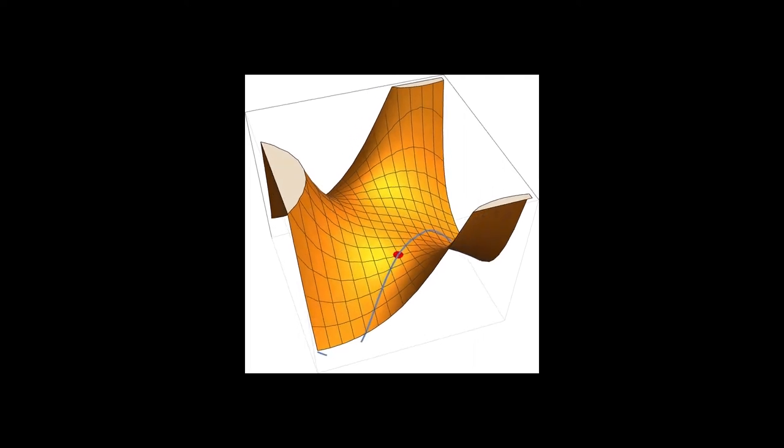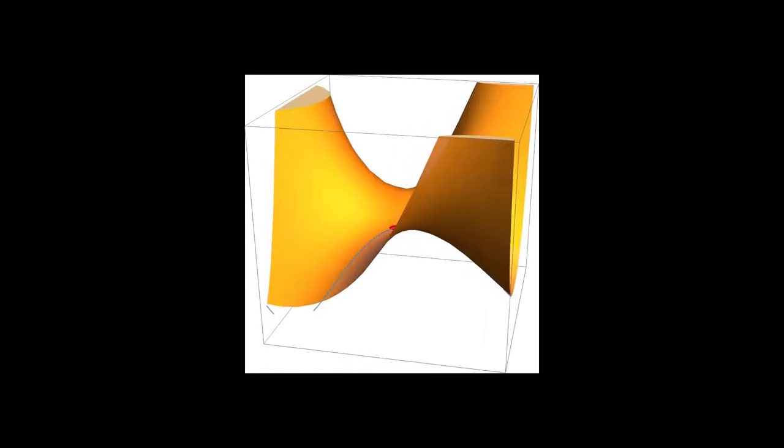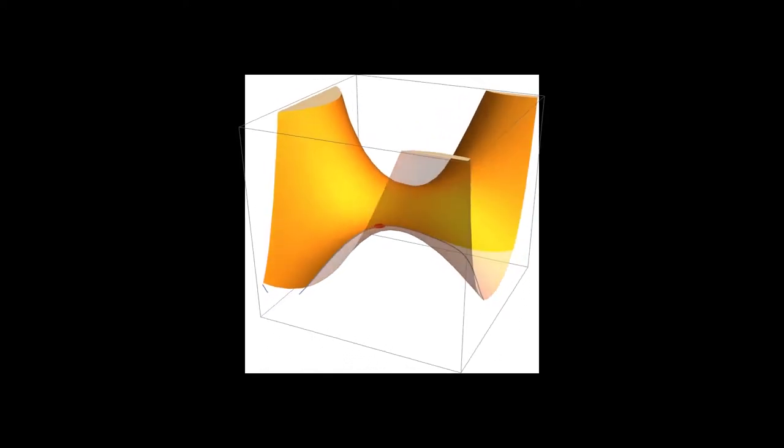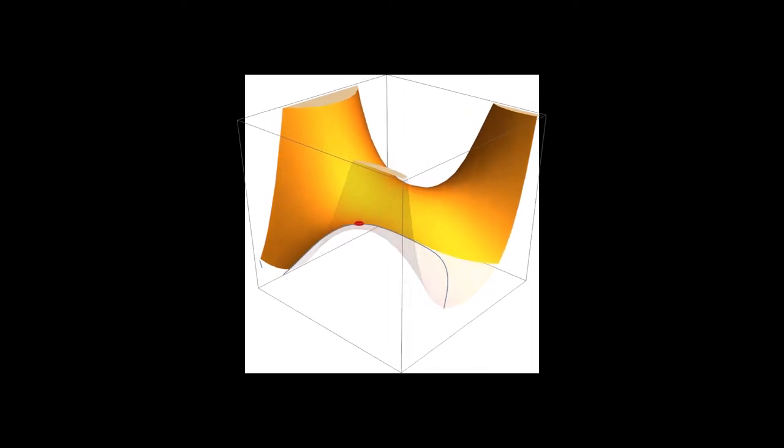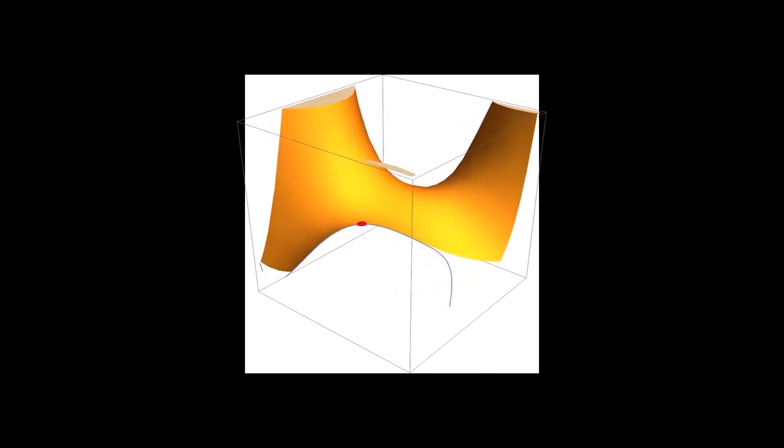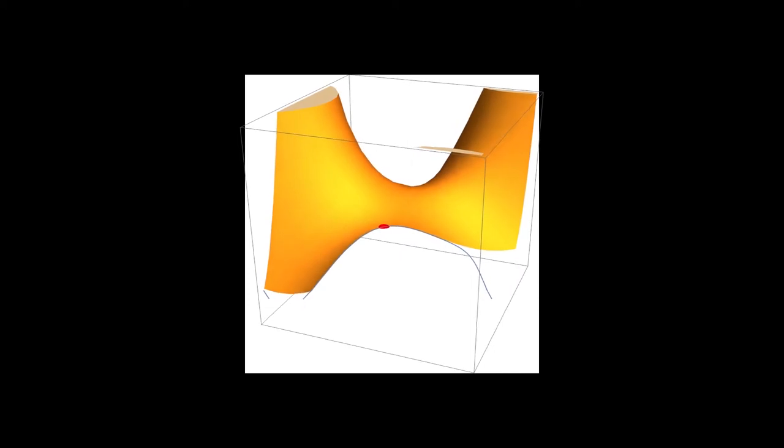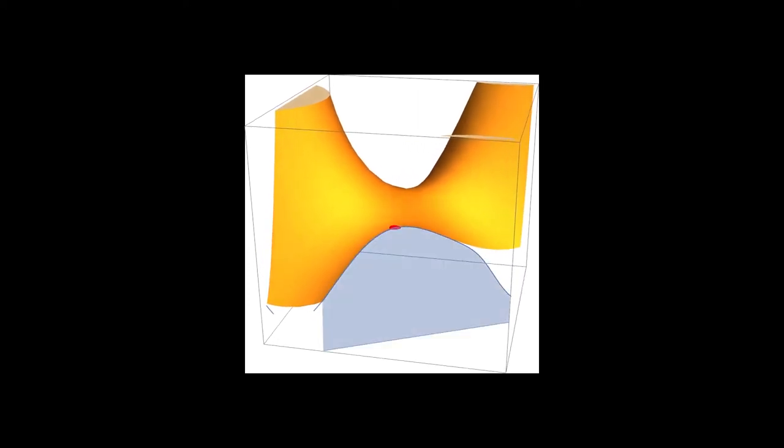So basically, let me show you probably in a more transparent way. So this is how it is defined. So now it's fully transparent, and this is the steepest descent direction. All right.